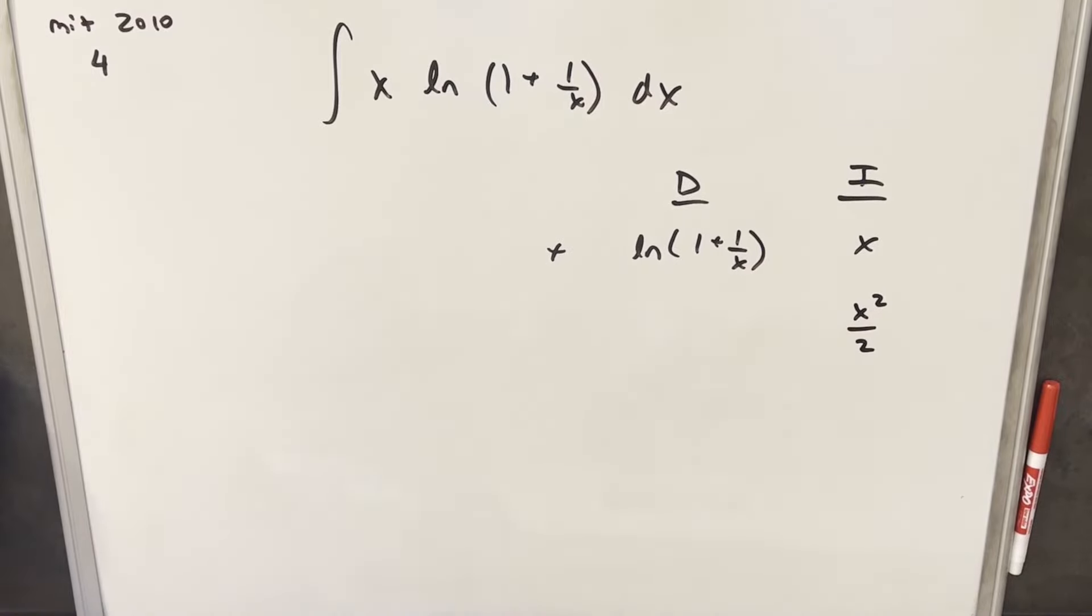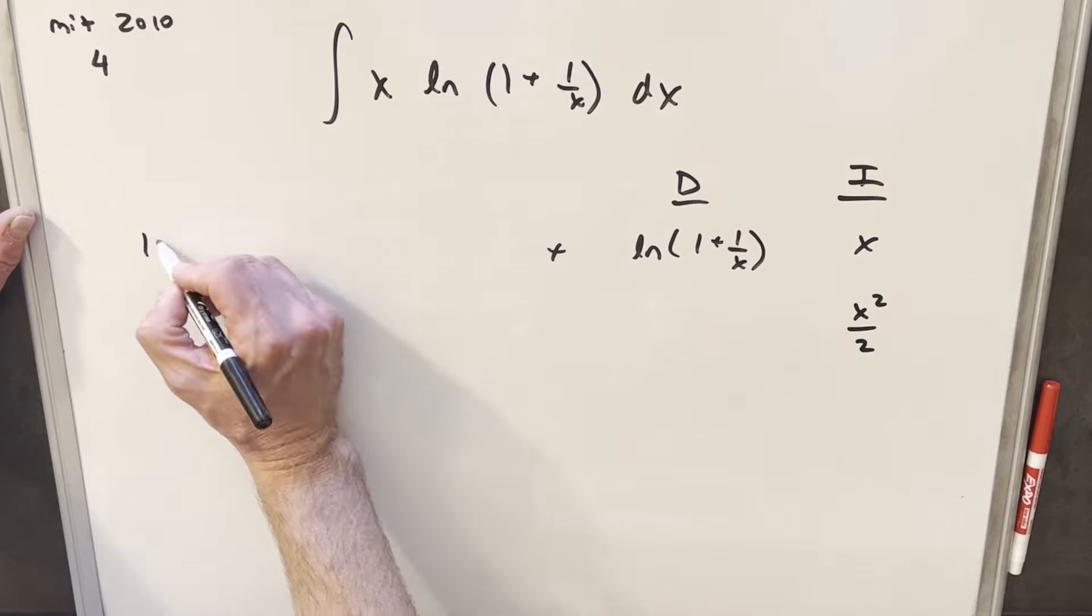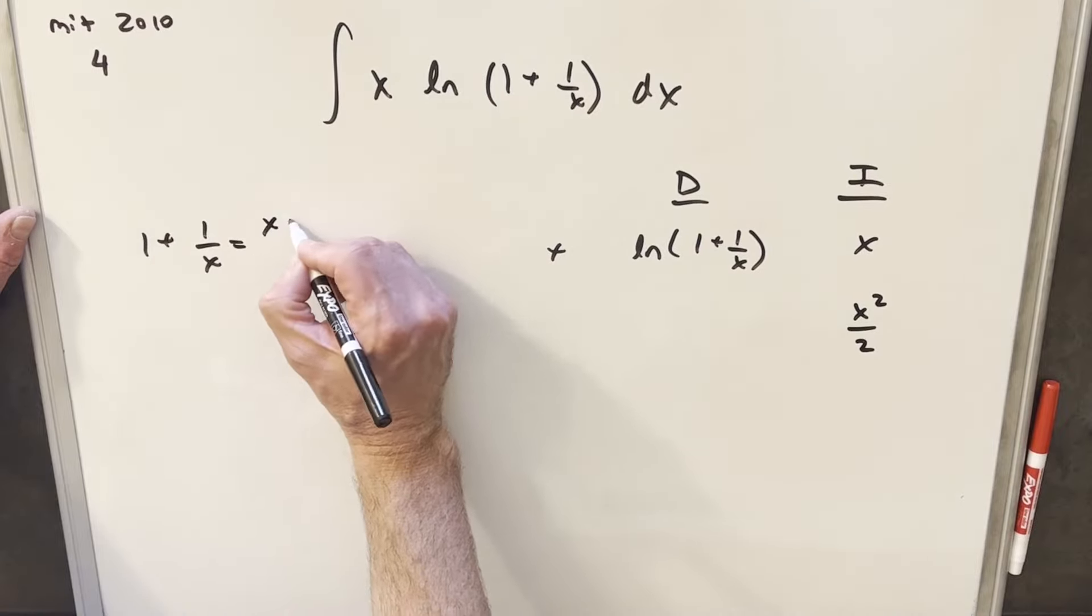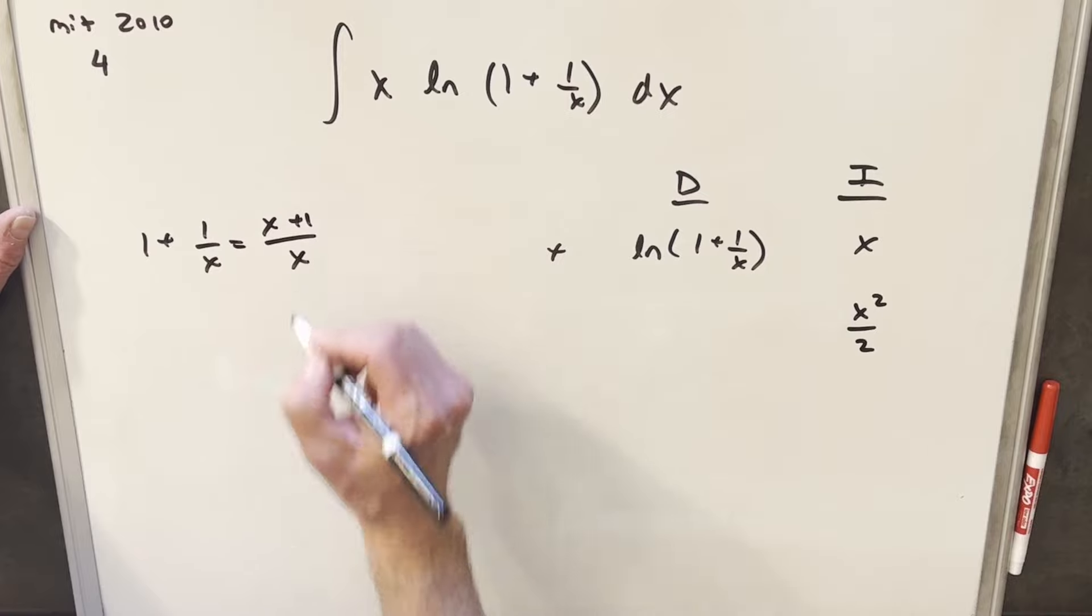Differentiating here, you know what I'm going to do, before we differentiate that, let's just notice that we can get a common denominator and write this as x plus 1 over x.